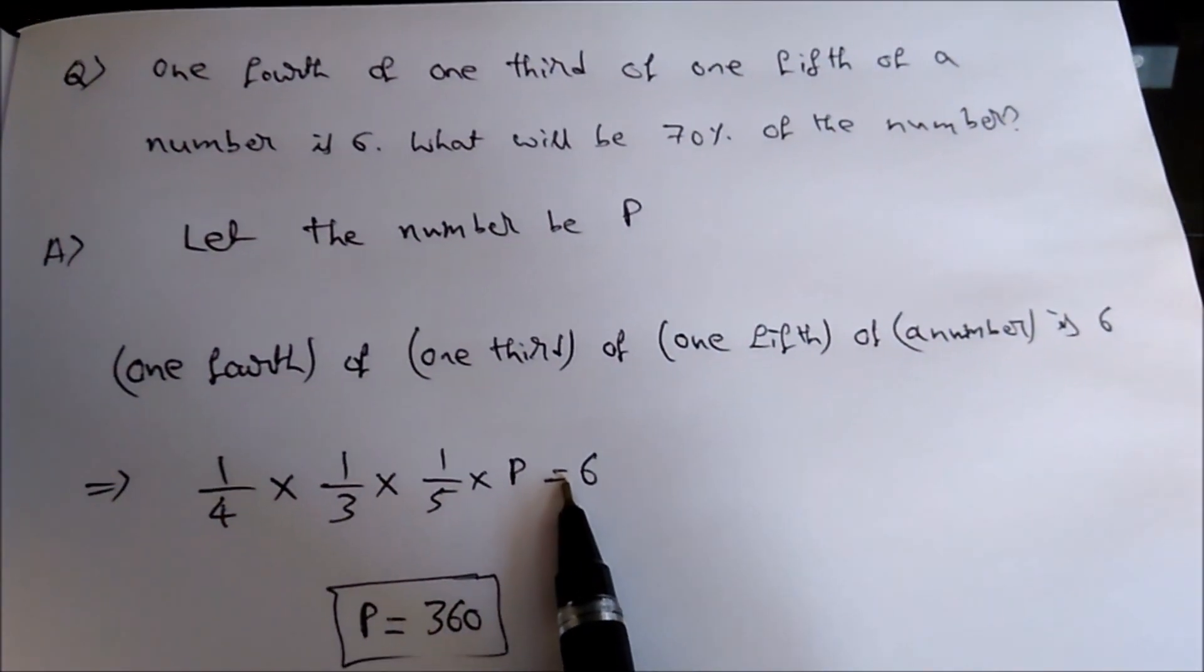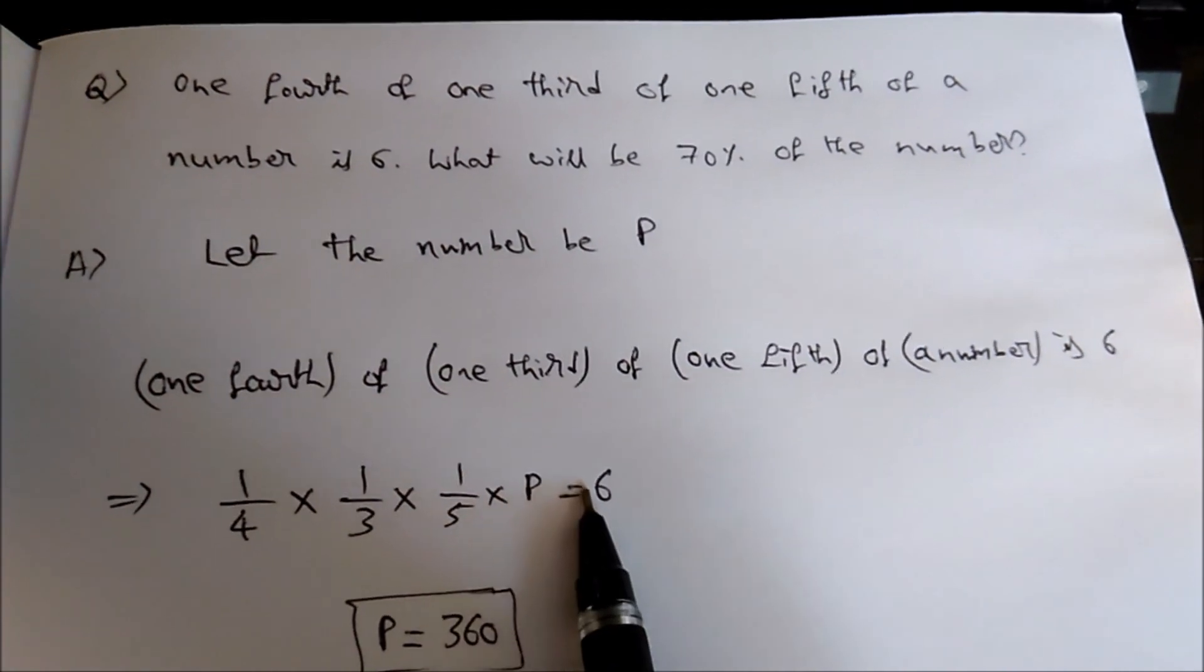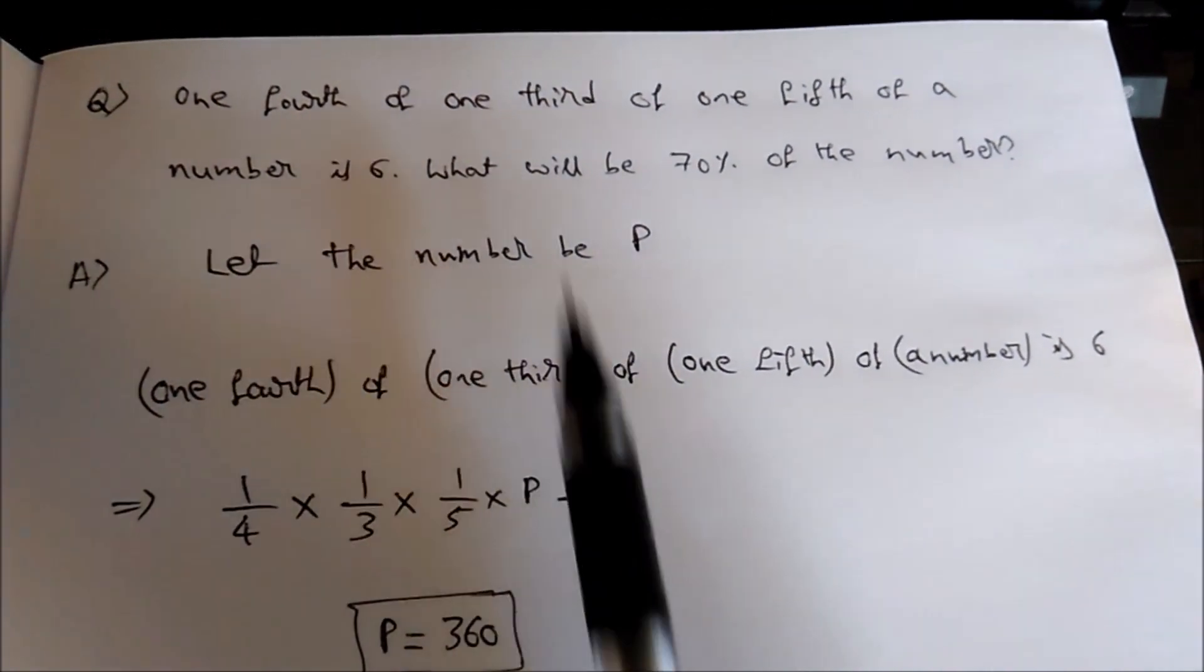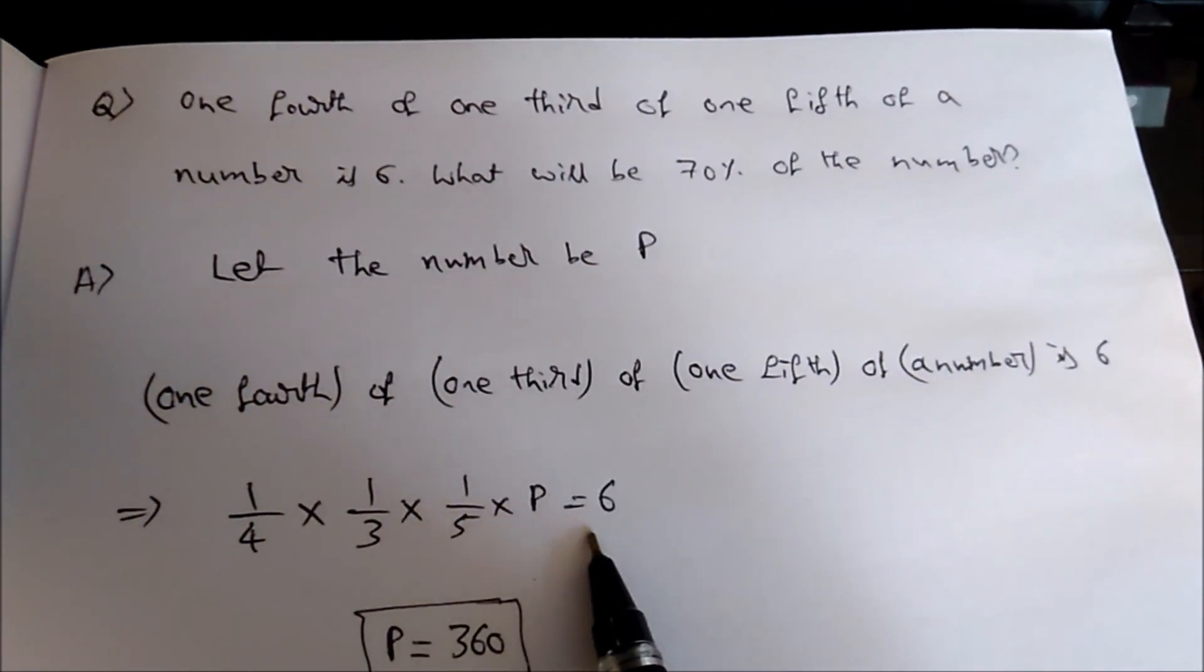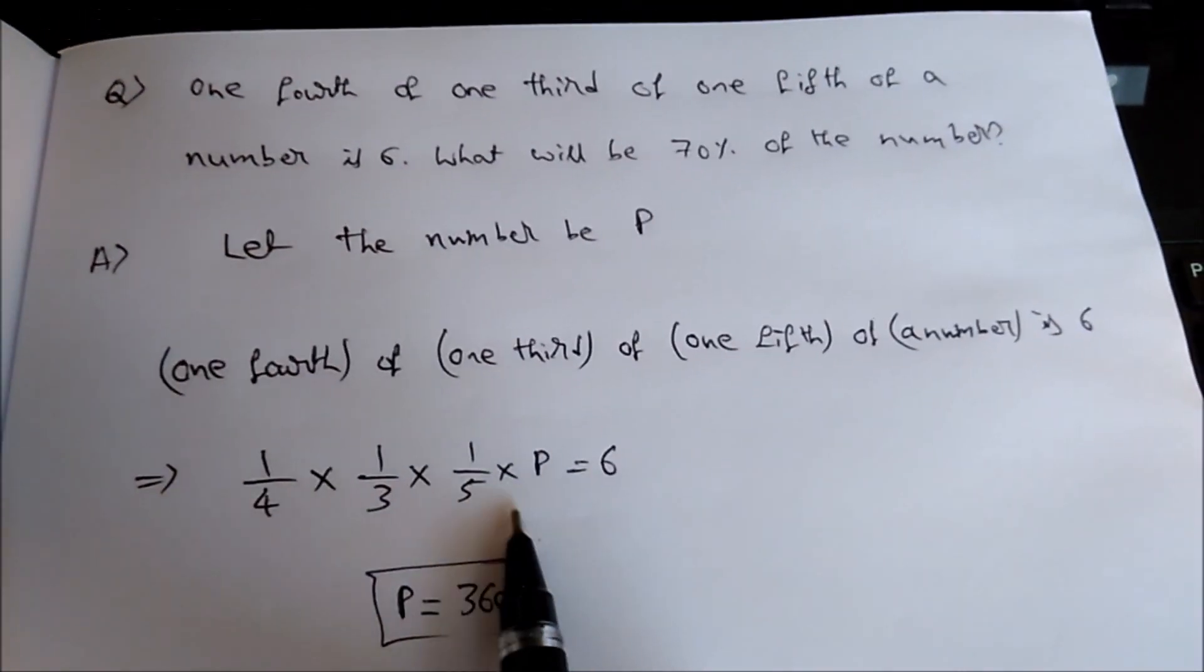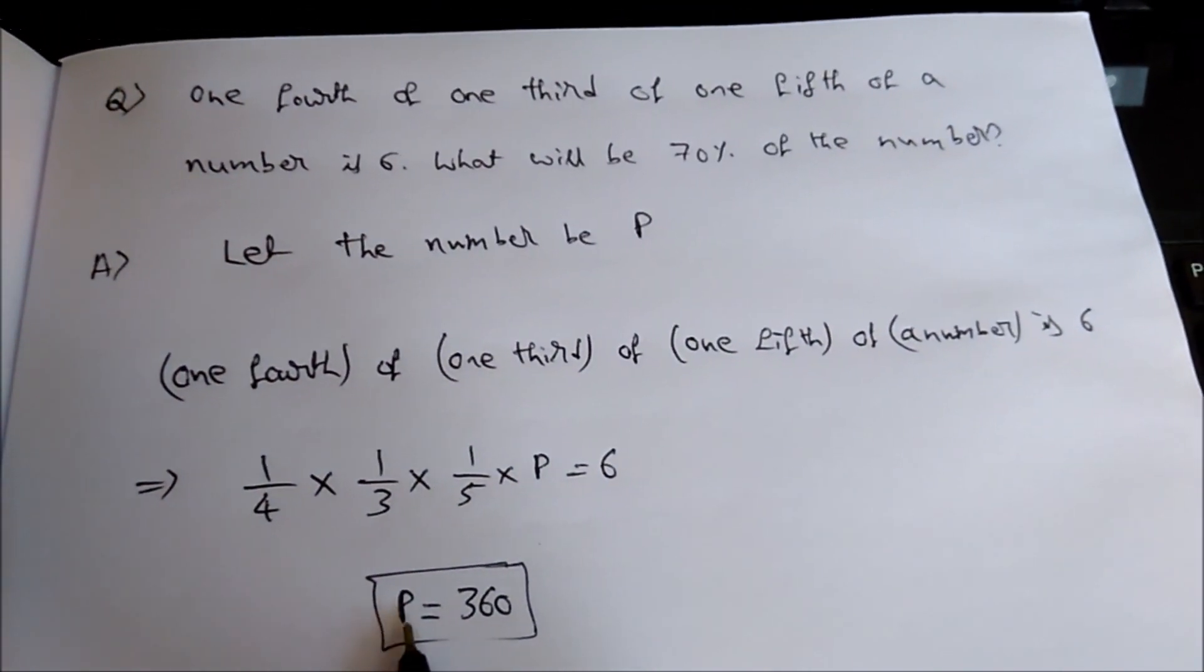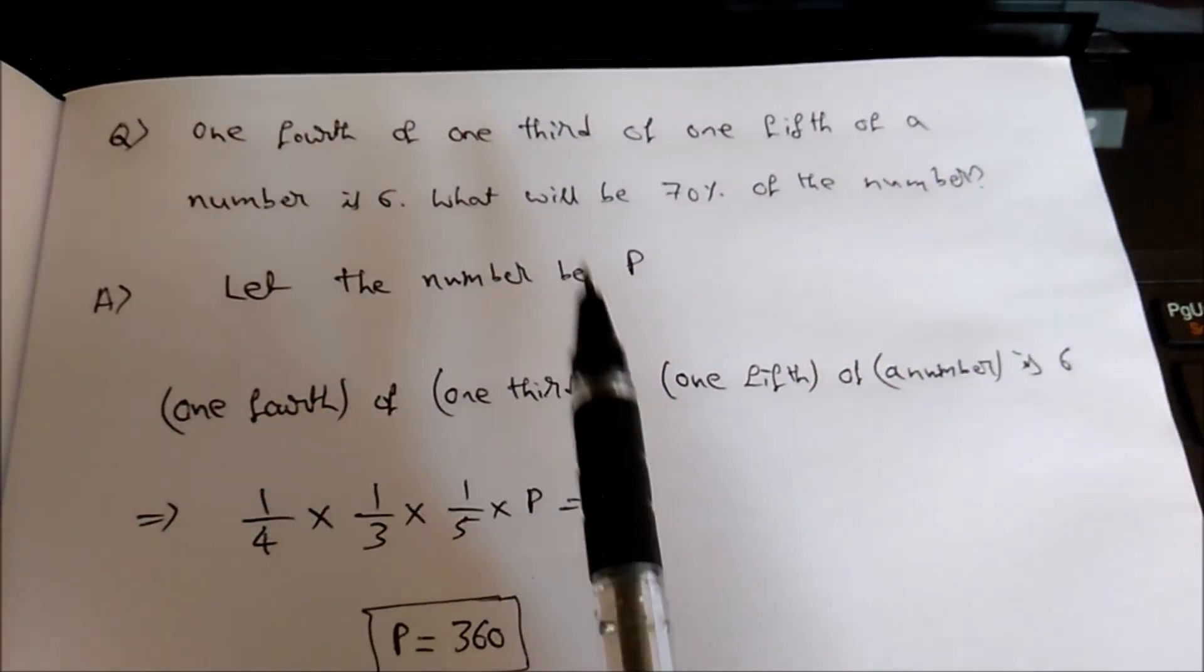Equal to 6. This is the equation we get from the statement. Now when you solve this, you will get the number value, that is P, as 360. So the number is 360.